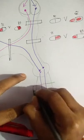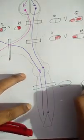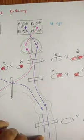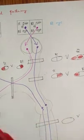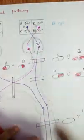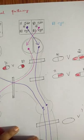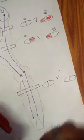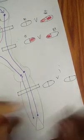Then optic tract lesion — here is the optic tract. The right optic tract contains fibers from the left side of both the right eye and the left eye. So a right optic tract lesion causes left homonymous hemianopia.